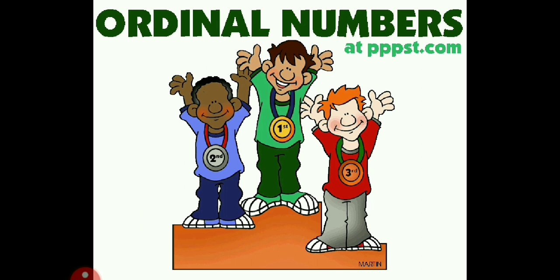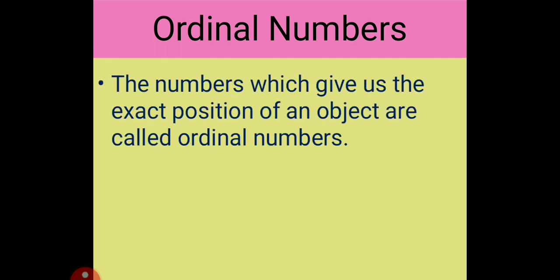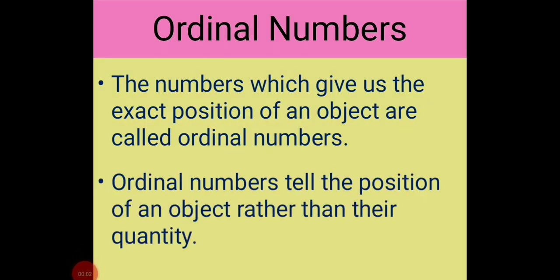Now we are moving to the main topic — ordinal numbers. Ordinal numbers means the numbers which give us the exact position of an object are called ordinal numbers. Position means which place or position that thing or person is on. That number is called an ordinal number. Ordinal numbers tell the position of an object rather than their quantity — it tells the exact position.